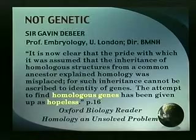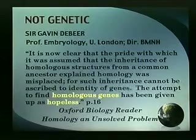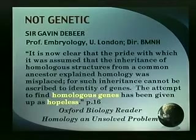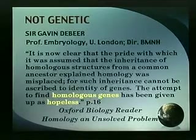Totally different genetics producing these hand-like structures. And so De Beer says there's no such thing as homologous genes. He continues saying the attempt to find homologous genes has been given up as hopeless. But if that similarity is not genetic and doesn't come from common genes, then we've got to look for another explanation. I think we have one.